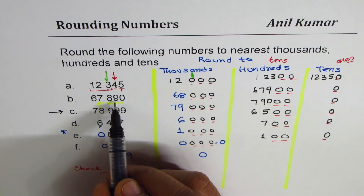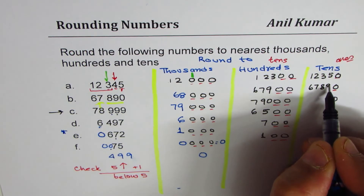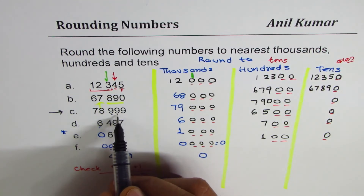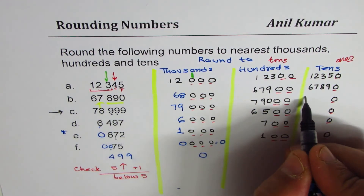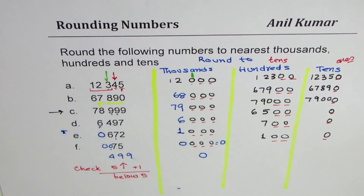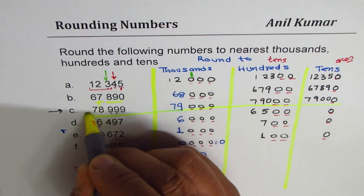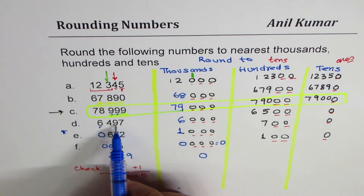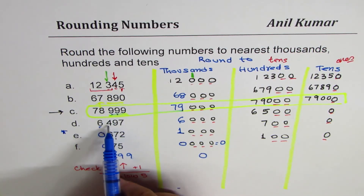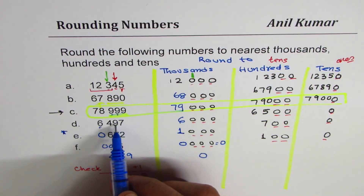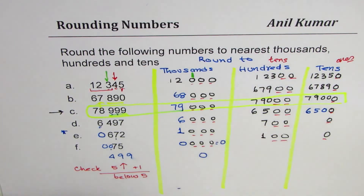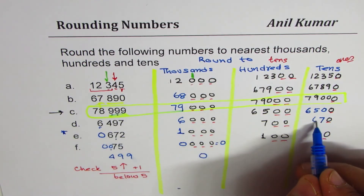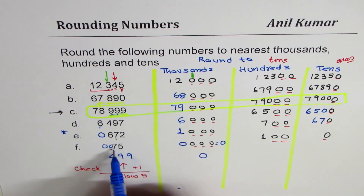For 67,899 — the number is already rounded to tens since it ends in ninety. So it stays 67,890. For 79,964 — the ones digit is nine, so we have to increase nine by one. After 99 comes 100, so it becomes 79,900. For 6,497 — the ones digit is seven, more than five, so it rounds up — we get 6,500. For 672 — the ones digit is two, less than five, so it becomes 670. For 75 — five or more, so it rounds higher — it becomes 80.